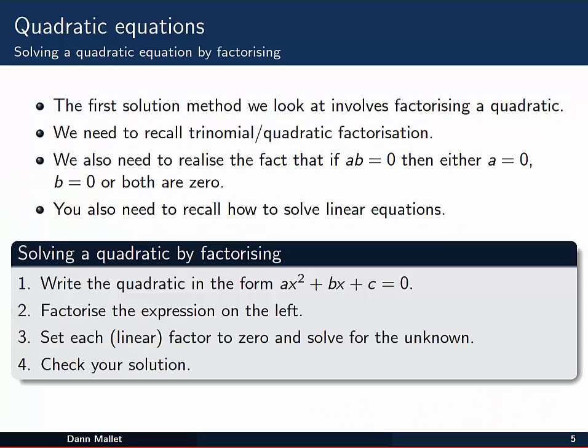So let's look at that first method, solving a quadratic through factorization. The first method needs us to remember how to factorize a quadratic in the first place. So if you can't remember that, make sure you refresh your memory on it before going on. We also need to know a little something here, ab equal to zero, implying that either a is zero, b is zero, or both a and b are zero. Sometimes we refer to that as the null factor law. The only way that we can get a times b to be equal to zero is if one of a and b is zero, or they both are. We'll be using that, along with factorizing quadratics, to solve quadratic equations. The other thing that you'll need to remember is to be able to solve linear equations. That forms part of it as well.